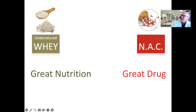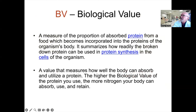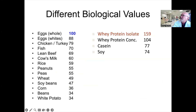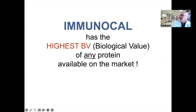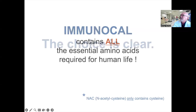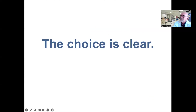Let's look at why whey is considered great nutrition. Biological value is a measurement of how valuable a protein is to your general metabolism. Different proteins differ in their value to general nutrition — eating a hot dog will not provide the same value as eating a nice piece of fresh salmon. These biological values can be quantified. We see a list of different BVs from different protein sources, and whey protein isolates have absolutely the highest biological value. Immunocal contains all of the essential amino acids needed by humans; NAC only contains cysteine. The choice is clear. Thank you for your attention.